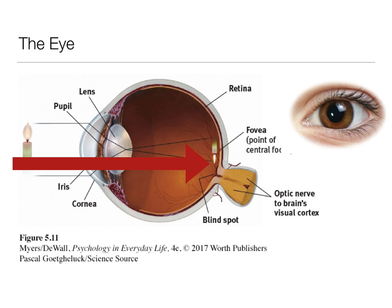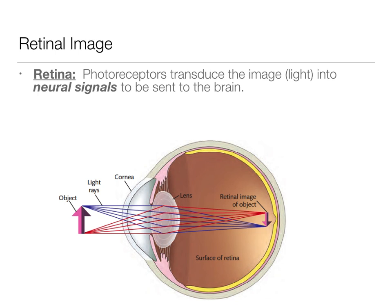We also have the fovea, which is the central point of focus. When you're looking at something, you're putting that image on your fovea. When that image goes onto your fovea, it actually flips upside down — you're getting a mirror image, much like a camera. The retina is where our photoreceptors are, and photoreceptors are specialized neurons that can transduce electromagnetic energy into the electrochemical energy needed for neural signals.